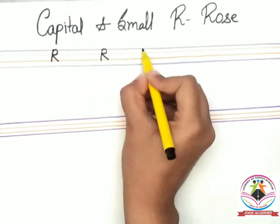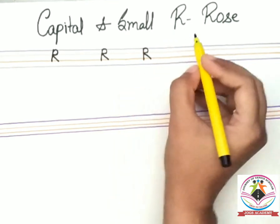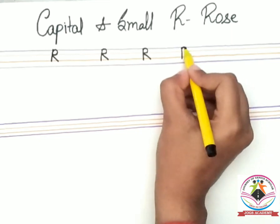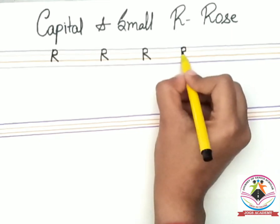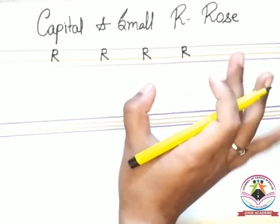Again standing line, half circle and slanting line. Now draw with me standing line, circle and slanting line. Yes very good. This is capital R.